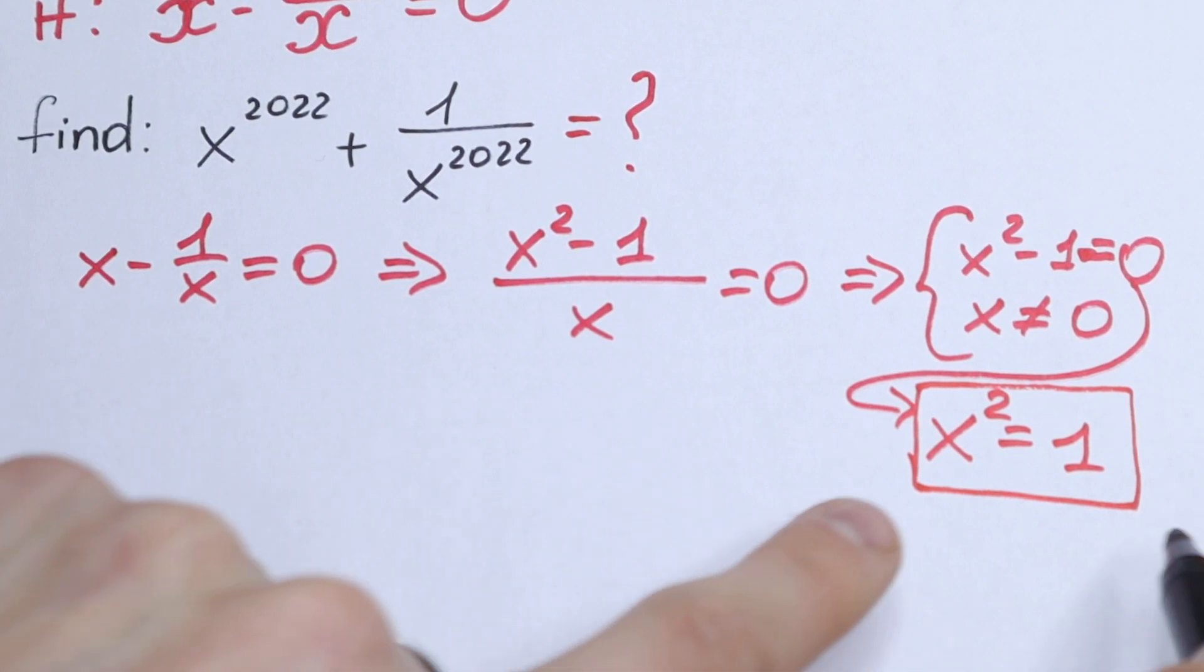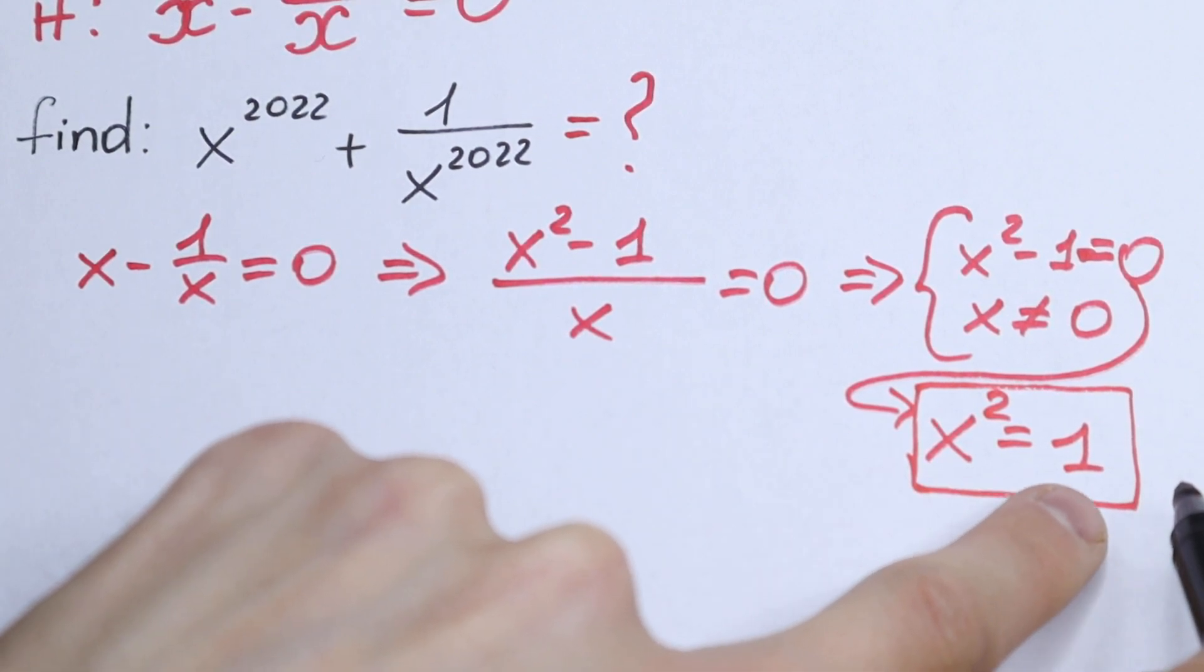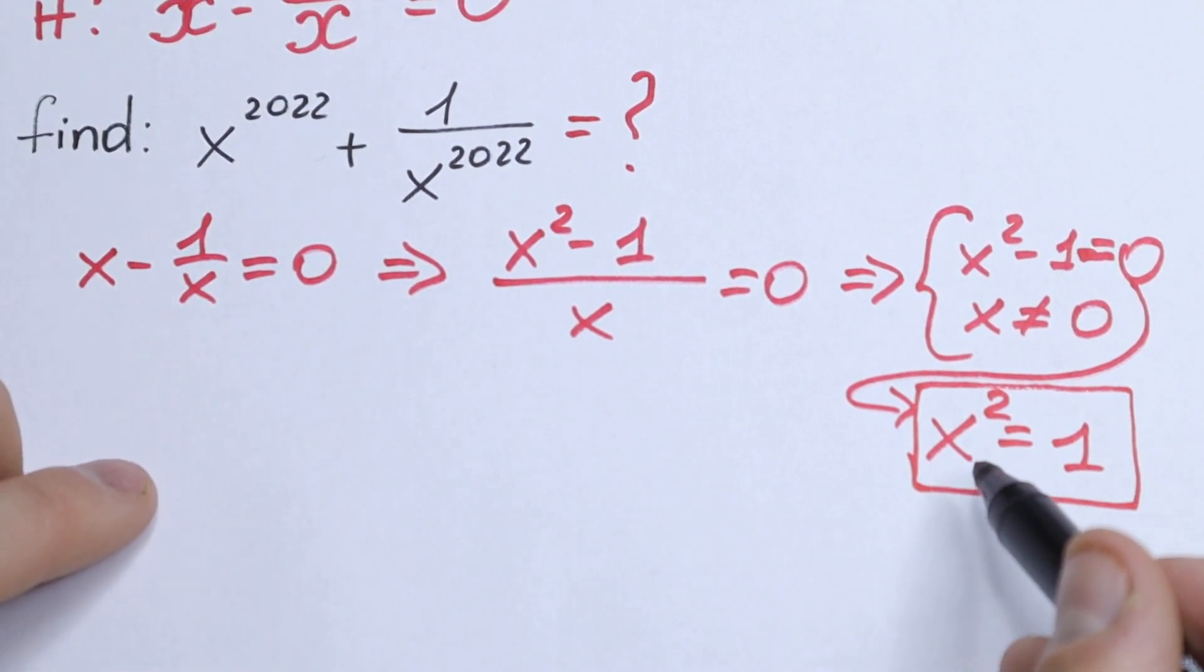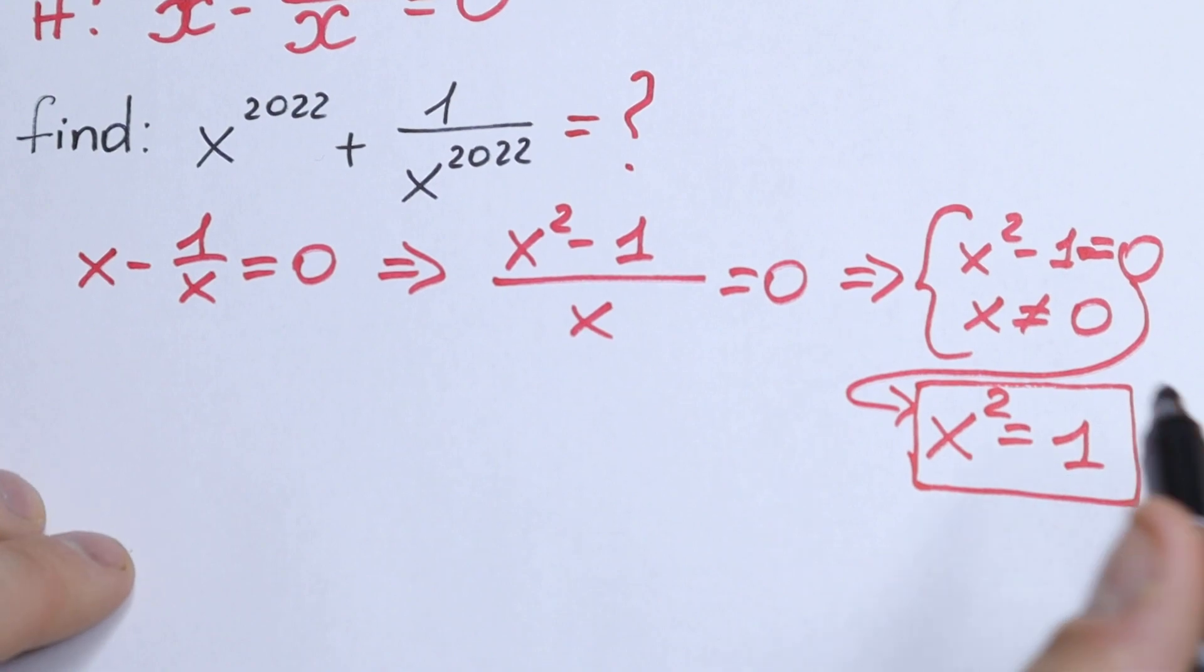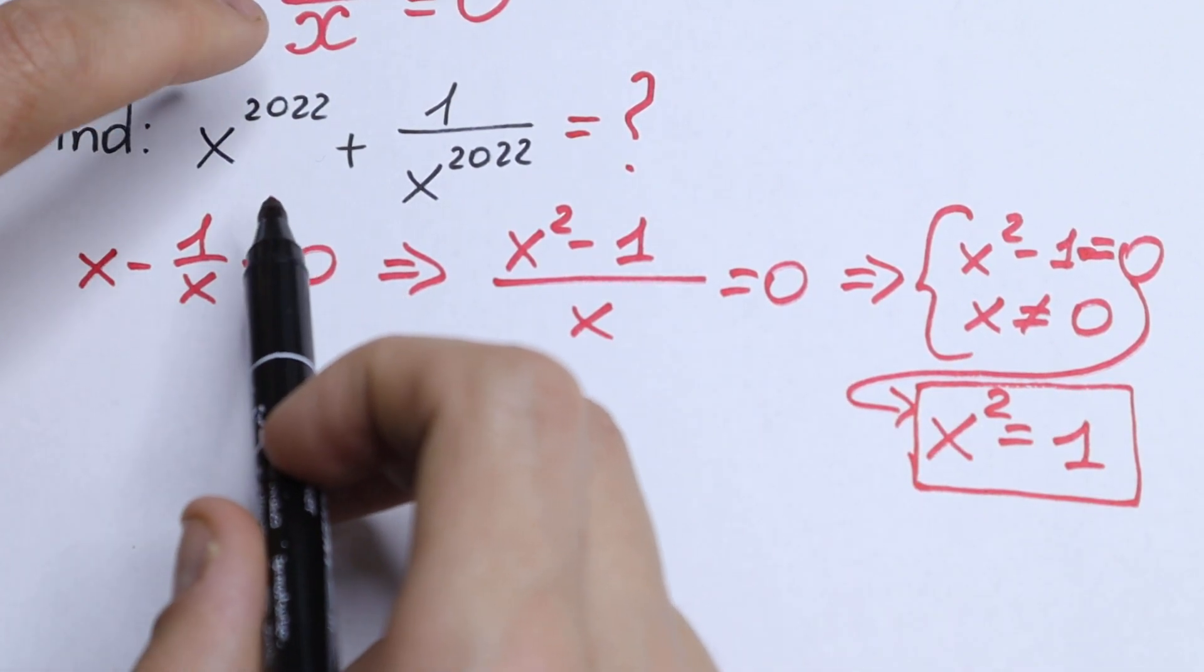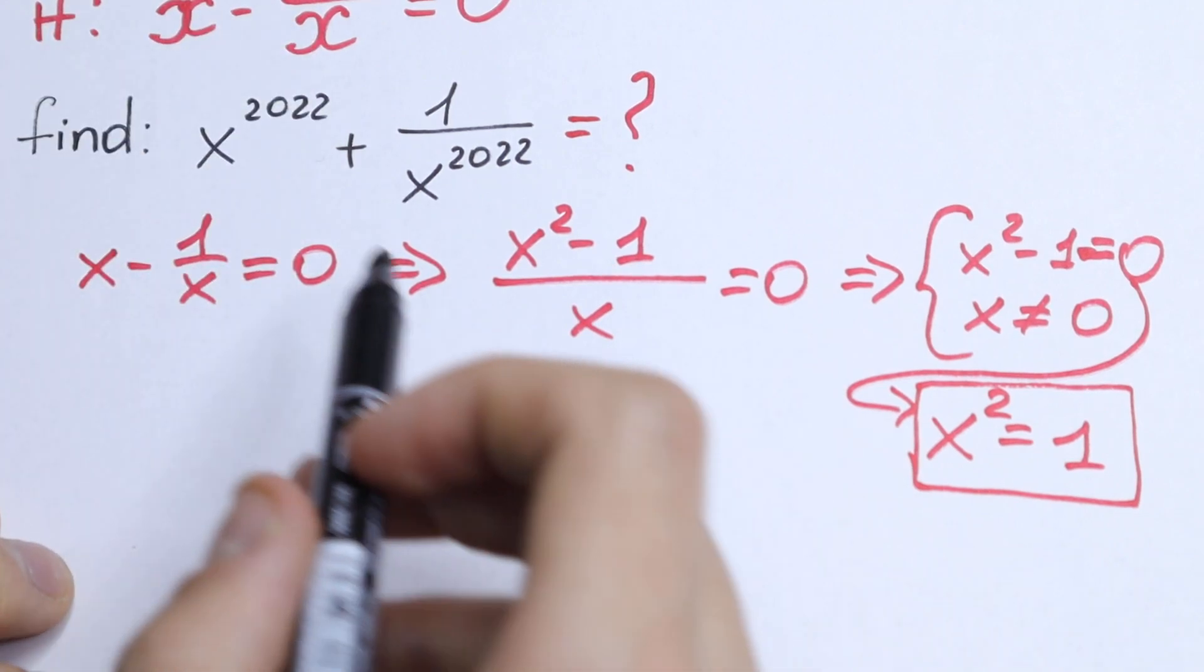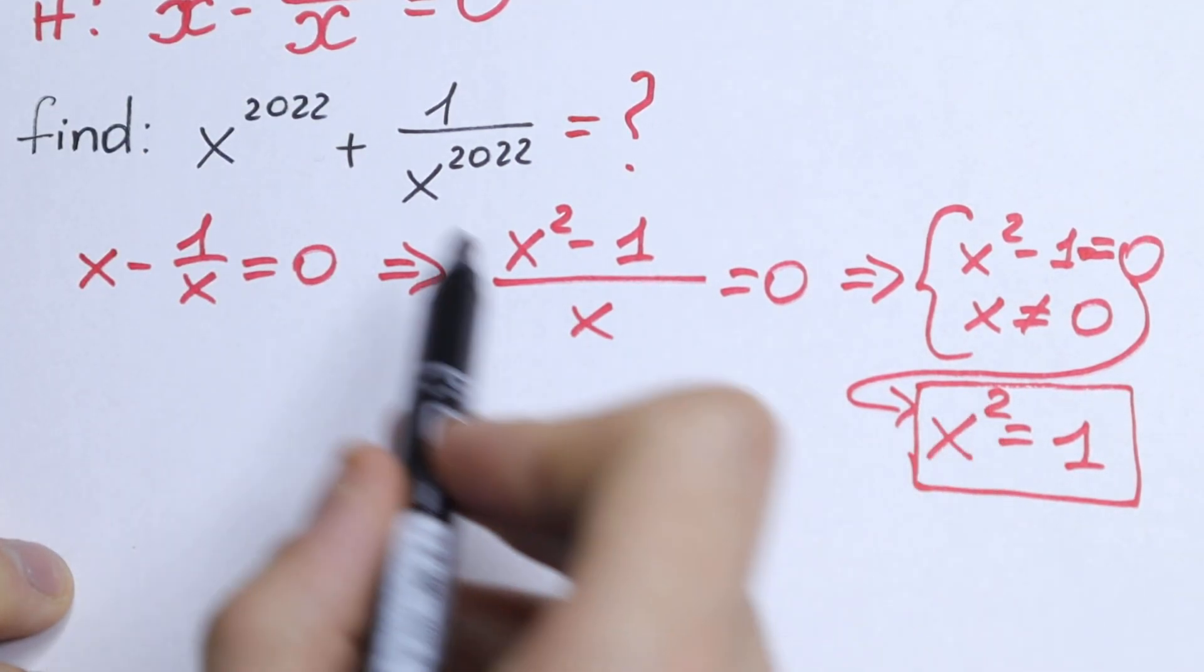This is a really good case, because if x squared equal to 1, we can simplify this second equation and we can plug in this x squared equal to 1. Right here we have 2022 power and 2022 power as well. So we can plug in this x squared right here.